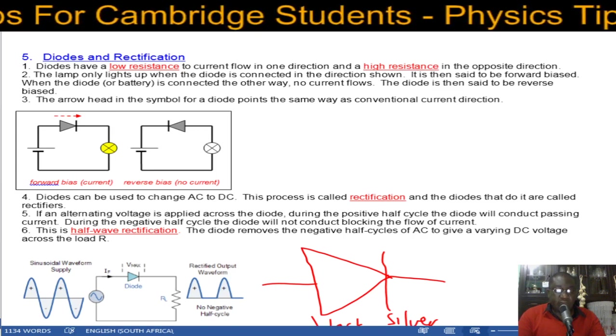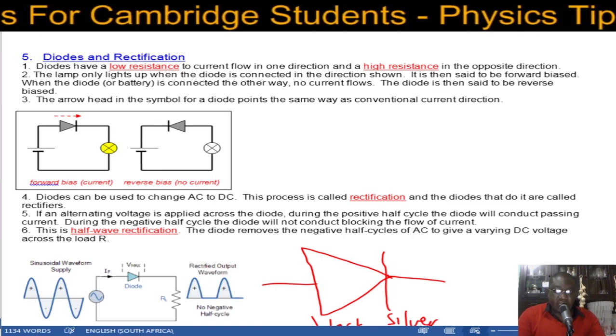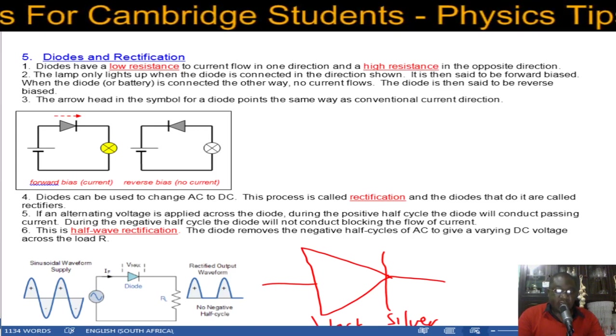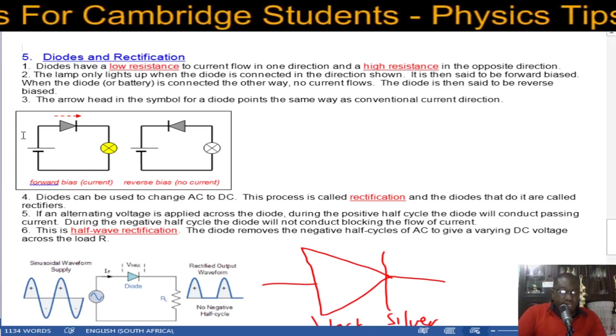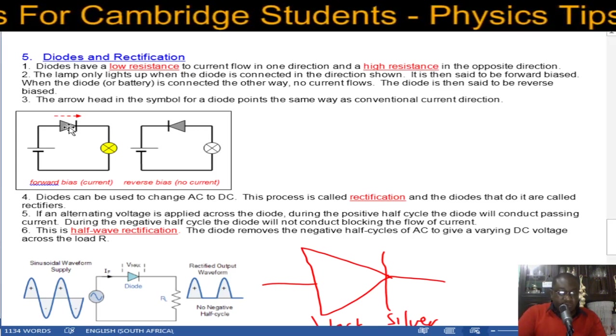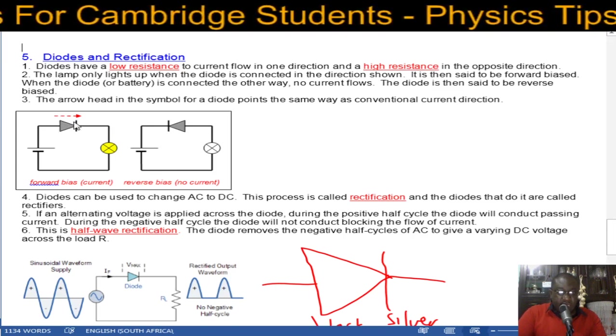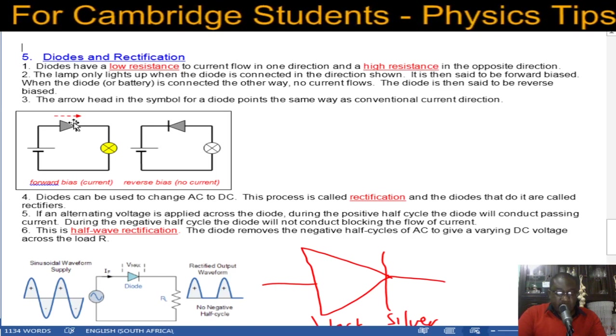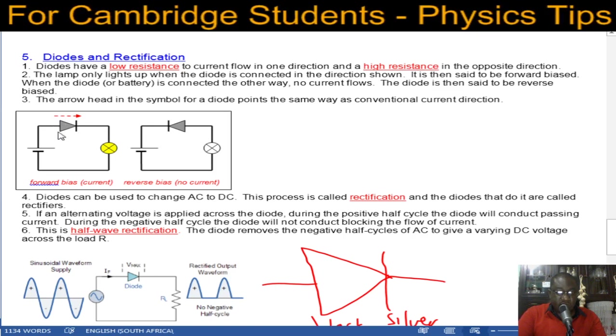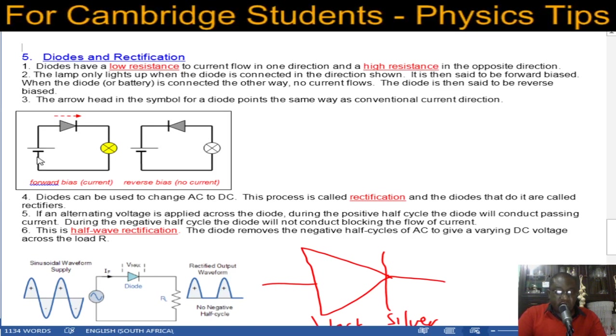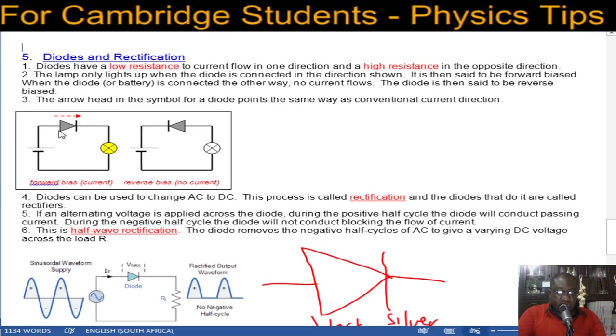Now diodes have a low resistance to current flow in one direction and a high resistance in the opposite direction. If you look at this circuit here below, that's the symbol for a diode. It looks like an arrowhead and this side is the side that is very high resistance and this side is the side that is with low resistance. When you connect it in a circuit make sure that the positive terminal is connected to this side here.